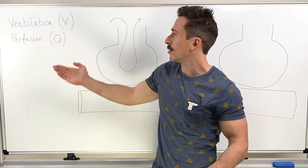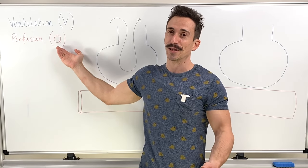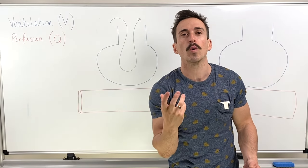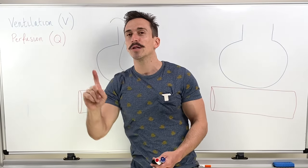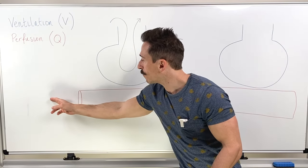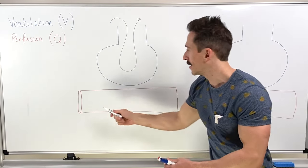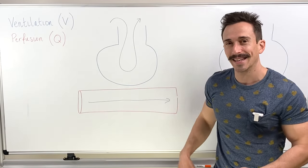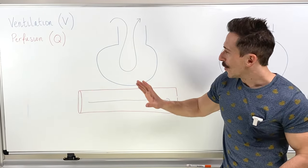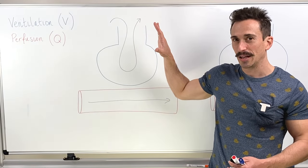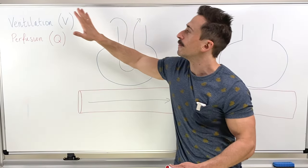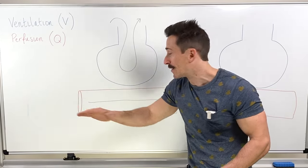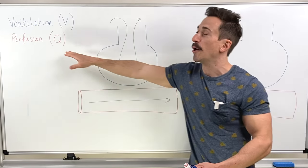Perfusion is obviously denoted by Q. Why is it a Q? Q is the beginning of the French word for quantity, because perfusion is referring to the amount of blood that moves past the alveolus — the amount of blood that can participate in gas exchange. Gas exchange at the alveolus is ventilation; gas exchange at the pulmonary arteriole, the blood vessel moving past the alveolus, is perfusion.